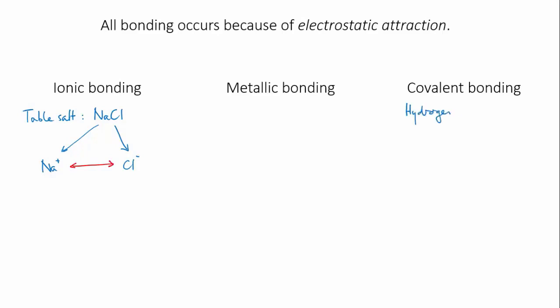There's covalent bonding, in which two atoms share electrons, and the attraction is between the nuclei of the atoms and the shared electrons. This is the bonding that holds two hydrogen atoms together to form a hydrogen molecule.